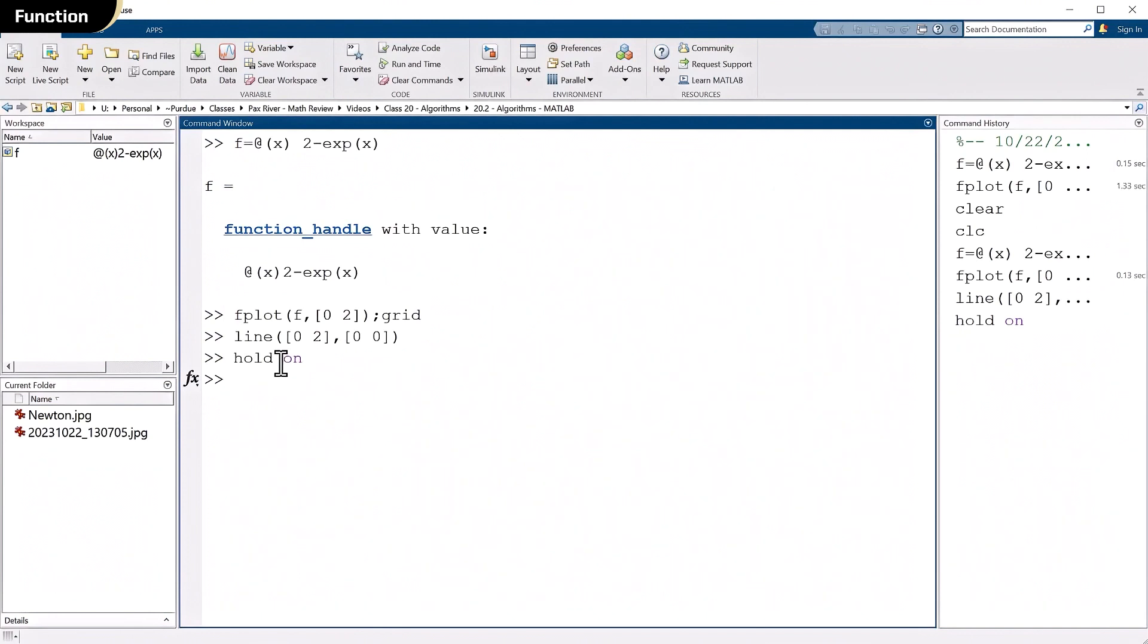Well, we have f of x. We need the derivative. Well, d of f, I'll call it df, derivative of f with respect to x, is just negative e to the x. So we have that as well.